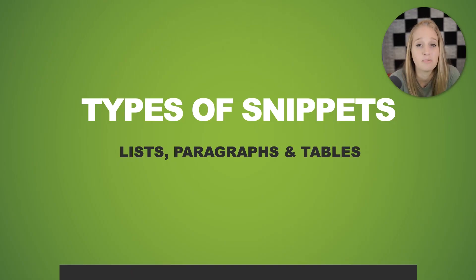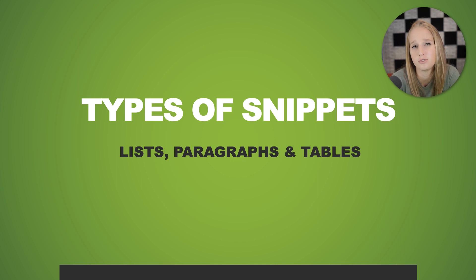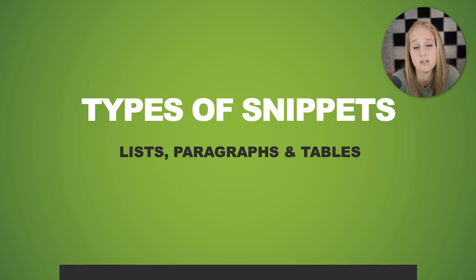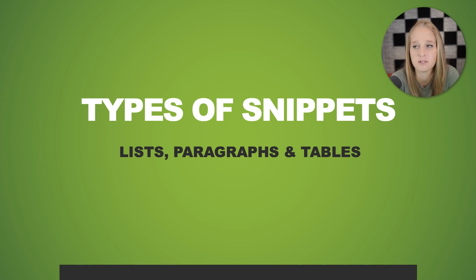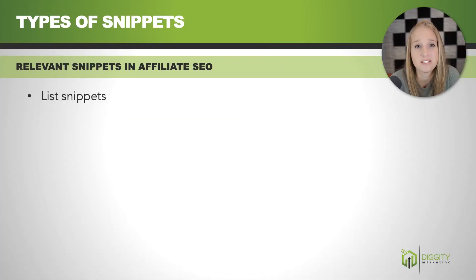So lists, paragraphs, and tables — those are going to be the three most common. You also have things like video snippets, but if you don't do videos, it's a little bit irrelevant. Lists, paragraphs, and tables are going to be three that just about anybody with a content site can optimize for.